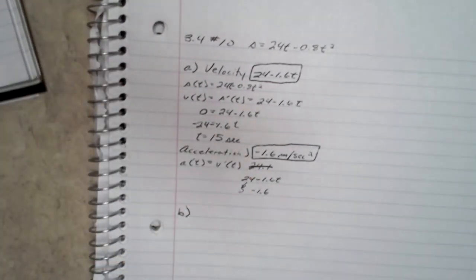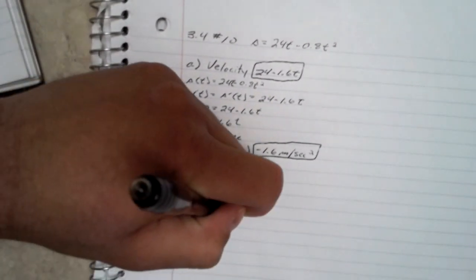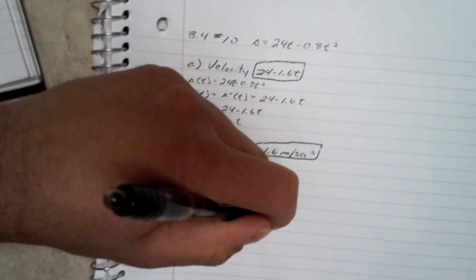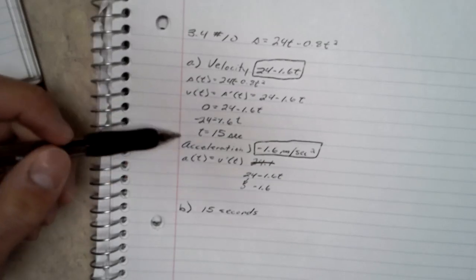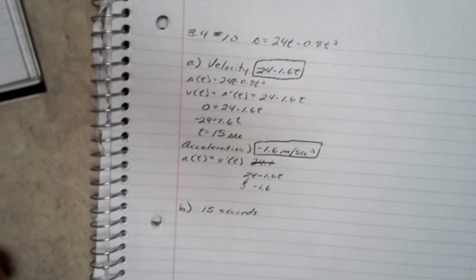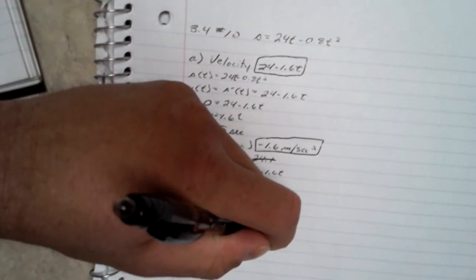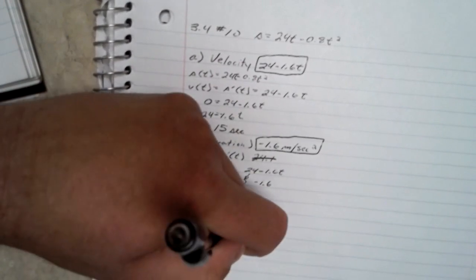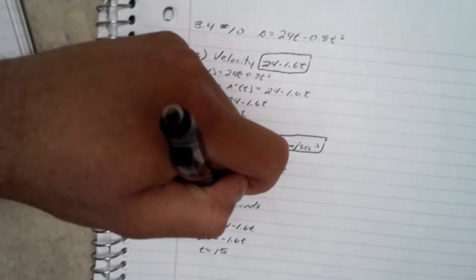Part B asks how long does it take the rock to reach its highest point, and I figured it was 15 seconds. By doing that I just set the velocity equal to zero, so 15 again. Yeah I agree with that. So when the velocity is positive it's going up, when it's negative it's going down, so that one moment at the top of the arc where it's not going up or going down, the velocity is zero. Okay, so 15 seconds.